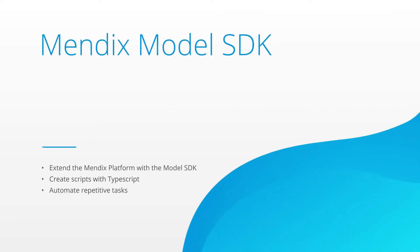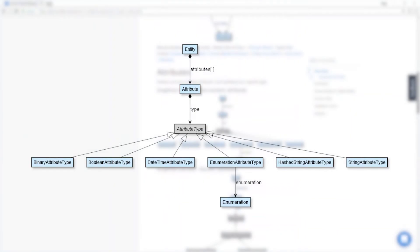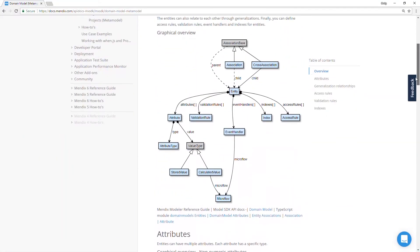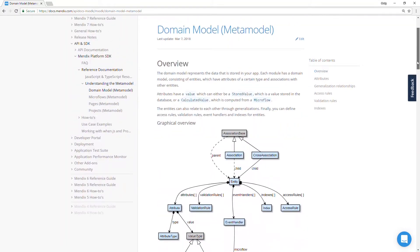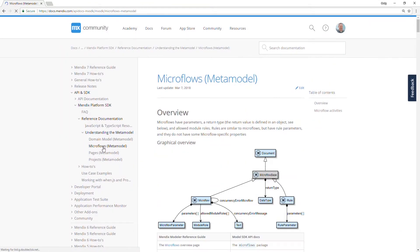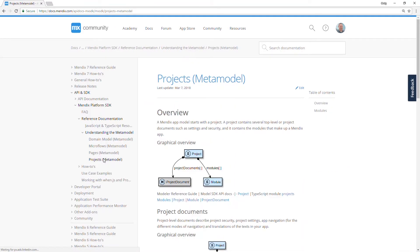In this video we'll explore the extensibility of the Mendix platform and how you can use a TypeScript-based Model SDK to automate any repetitive or error-prone task. The Model SDK provides you with a whole new way to interact with your application model. You get access to all aspects of your app model, enabling you to both read from and write to it, and we have opened up our meta model, giving you a detailed description of how our Mendix app models are structured.